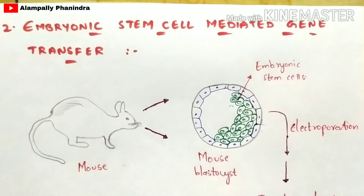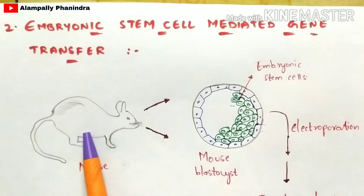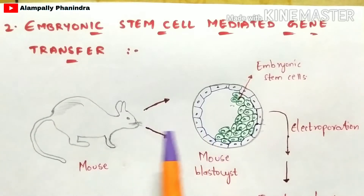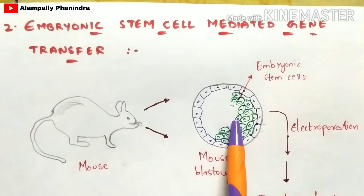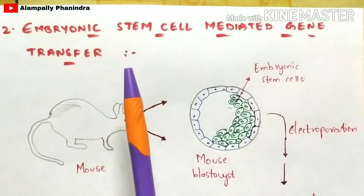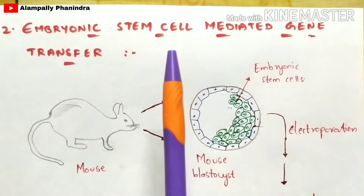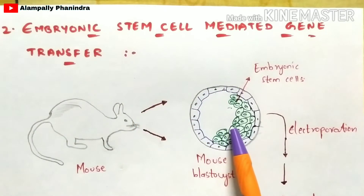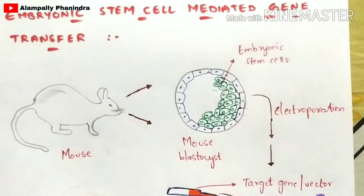Now let us discuss embryonic stem cell mediated gene transfer, using the mouse as the best example. A mouse contains a blastocyst, and this blastocyst consists of embryonic stem cells — shown here in green. We are going to use these embryonic stem cells to perform this experiment.